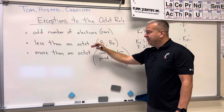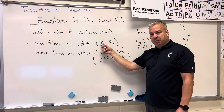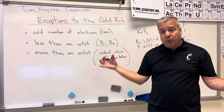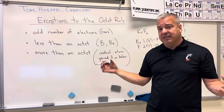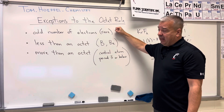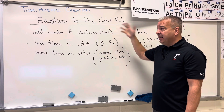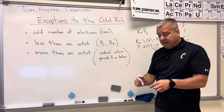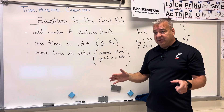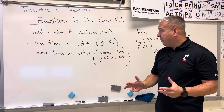When can you have less than an octet? When your central atom is boron or beryllium and you have something that's really electronegative as your non-central atoms. And in most introductory chemistry classes, you'll never have to deal with an odd number of electrons — so if you ever get an odd number, you're probably doing something wrong.